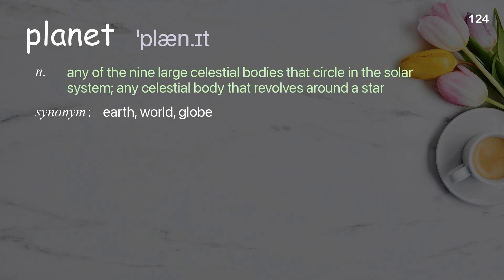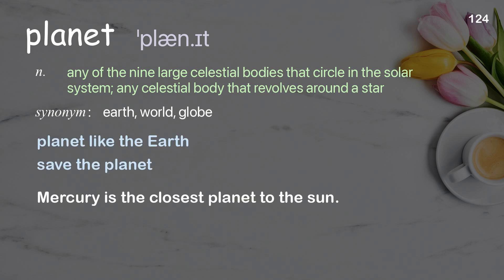Planet: any of the nine large celestial bodies that circle in the solar system; any celestial body that revolves around a star. Examples: planet like the Earth, save the planet. Mercury is the closest planet to the sun.